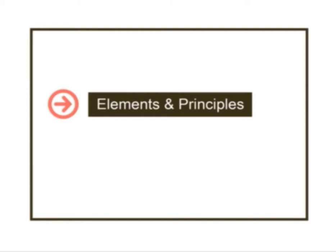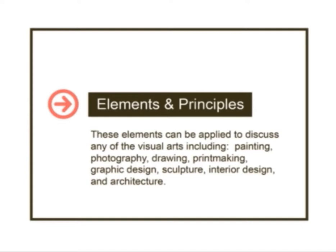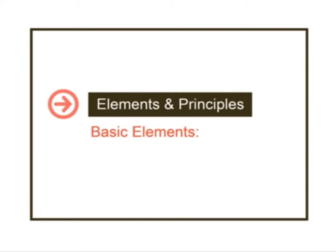We're going to go through them step by step so that everybody is on the same level playing field. It may be a little bit repetitious for some of you who have had it before, and I apologize for that, but I think it's very important that we all use the exact same terms. The elements and principles are the visual language — they are the equivalent of verbs and nouns in grammar that help us communicate. These elements can be used to discuss any of the different media, whether painting, printmaking, photography — the elements and principles apply the same way across all disciplines.